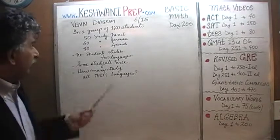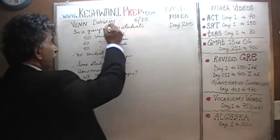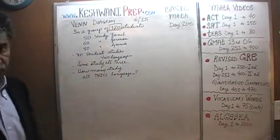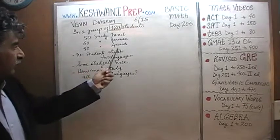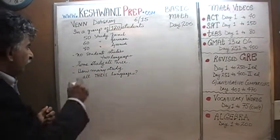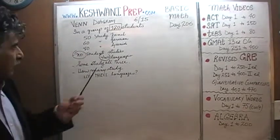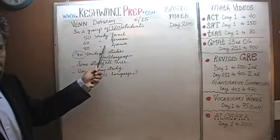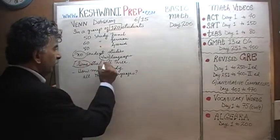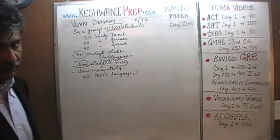We are told that we have a group of 120 students. 50 out of these 120 students study French, 60 of them study German, and 80 of them study Spanish. We are further told that there is no student who studies exactly two languages. Everybody studies either exactly one language, or some study all three. But there is nobody who studies exactly two languages.